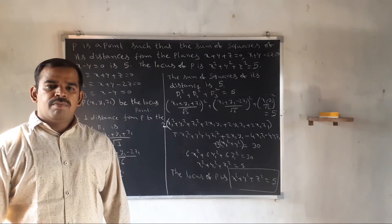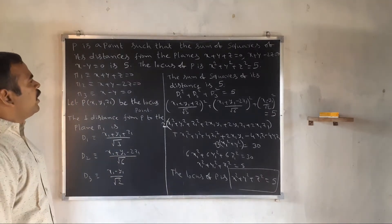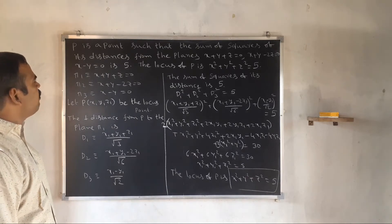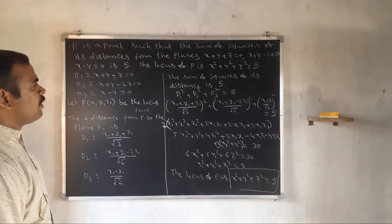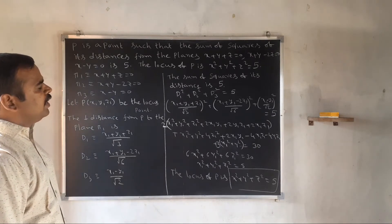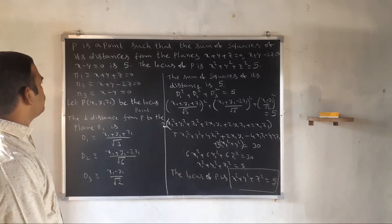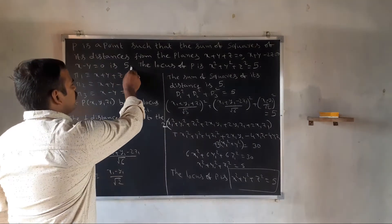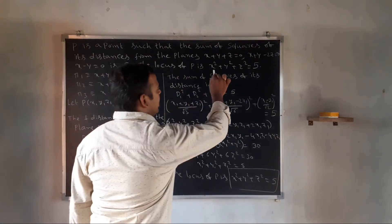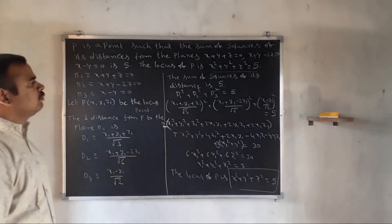Another problem of plane equations. P is a point such that the sum of squares of its distances from the planes x plus y plus z equal to 0, x plus y minus 2z equal to 0, and x minus y equal to 0 is 5. The locus of P is x square plus y square plus z square equal to 5.